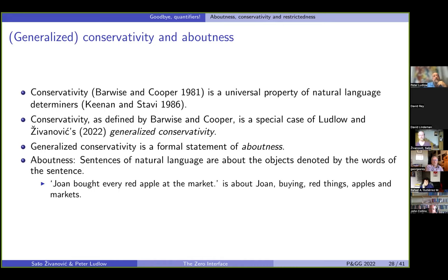Now, in our book, we generalize conservativity somewhat and claim that it is a formal statement of aboutness. So what do we mean by aboutness? Something very, very trivial. So look at this sentence here. This sentence is about Joan. It's about buying. It's about red stuff. It's about apples. It's about markets. It's not about Peter. It's not about sleeping. It's not about blue stuff. It's not about pears, and it's not about houses. So sentences of a language of natural language are really about the objects denoted by the words of the sentence. And if this looks trivial, it's probably because that's how your language works. But in math, it might not be as trivial.